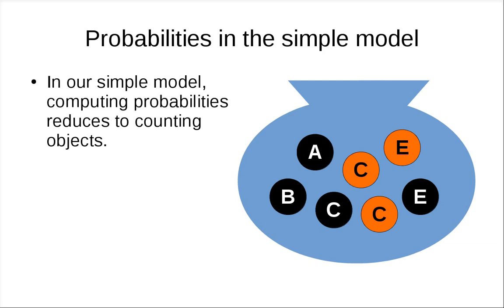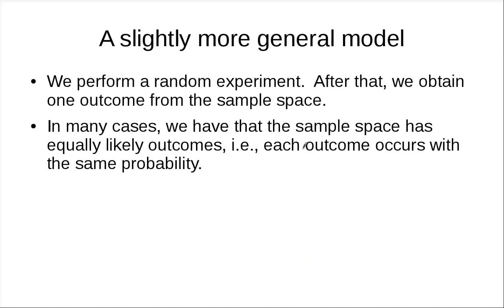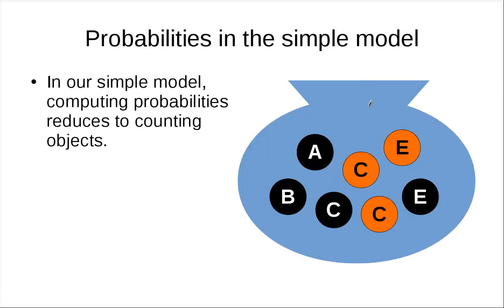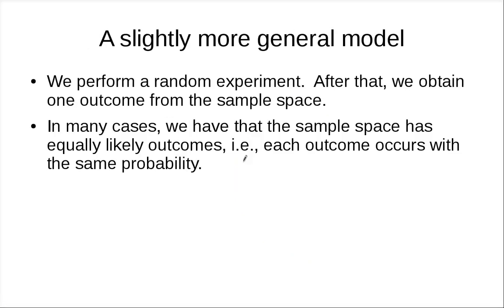In previous lectures, we used a simple model where we have a bag and we pick one object out of this bag. We're going to move to a slightly more general model, but it is basically the same. In the previous simple model, the bag — the set from which we pick some object — represents the sample space. We'll change the word slightly: instead of picking something out of a bag, we have a random experiment.